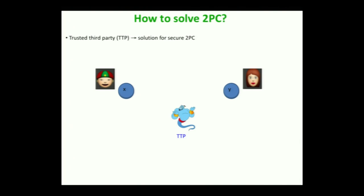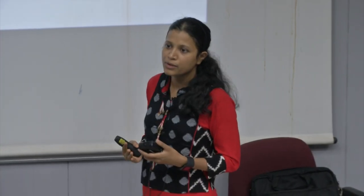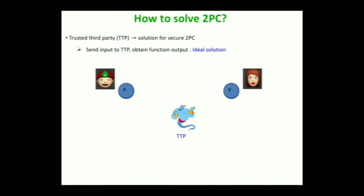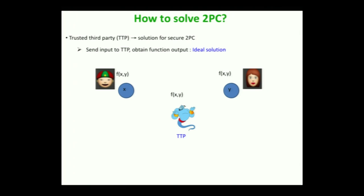Now let us ask how we can solve the problem of 2PC. The problem can be very straightforwardly handled if you can trust someone — a trusted third party. The parties can each send their private inputs to the trusted party through a secure channel. The trusted party computes the function f on x and y and hands over the output to the individual parties. Since the channels are private, the parties get to know only the function output and nothing beyond.